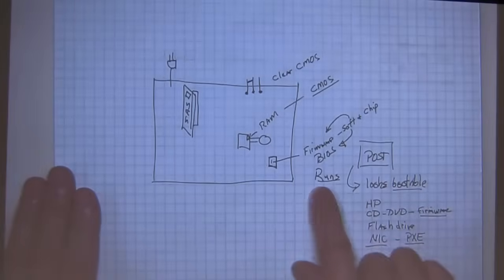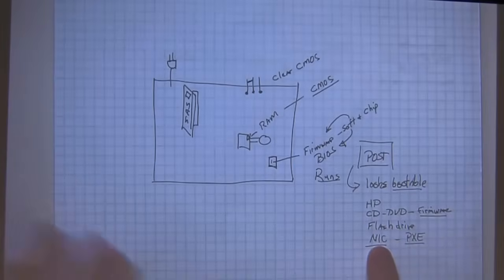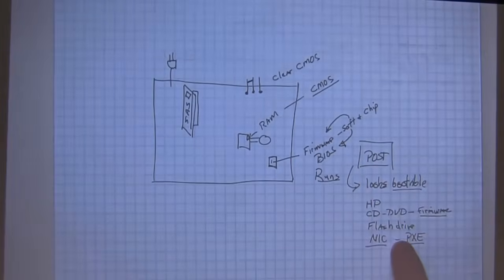We know that BIOS runs. It does a POST and then it looks for a bootable device. That could be a hard drive, a CD-ROM, a flash drive, and a NIC. But the NIC must include some kind of firmware on that network card. And that firmware is called, that software inside that chip is called PIXIE, pre-boot executable environment. We'll get into PIXIE. Don't go here yet.